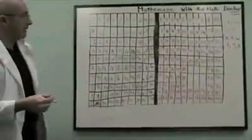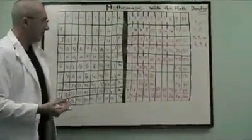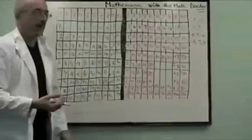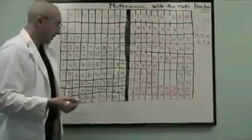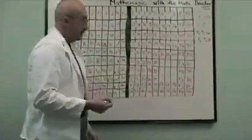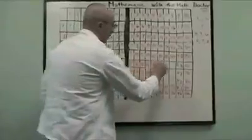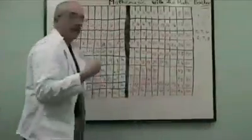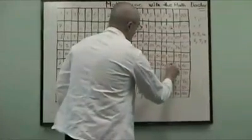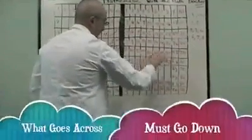Once you've got the fours done, there are only nine boxes left to finish. These are the ones that everyone has difficulty with — your seven times sevens, eight times sevens, those sorts of things. But they are actually quite easy. We've got thirty, we're adding six: thirty-six. Thirty-six and six: forty-two. And I always tell everybody, don't say forty-two plus six, say forty-six plus two: forty-seven, forty-eight. Put forty-two there and forty-eight there, because what goes across must go down. Suddenly we've only got four boxes left to go.